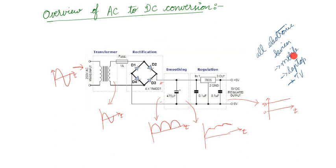For example, this entire circuit will be in your adapter or charger. For a mobile phone, we convert the 230 volt AC power supply into 5 volts. For a laptop — the Lenovo laptop I am using — I need 20 volt DC supply. So this entire circuit will be there in your charger or adapter, converting your AC to DC.